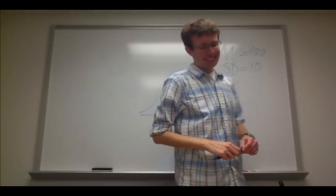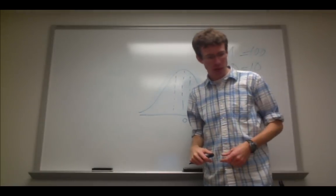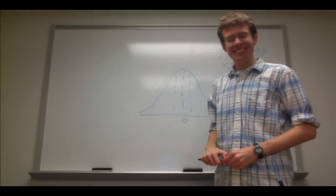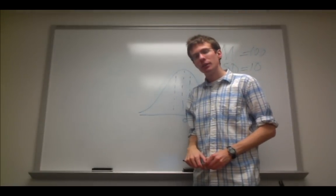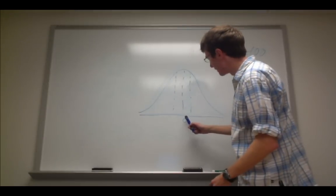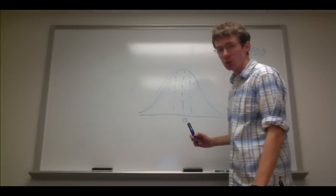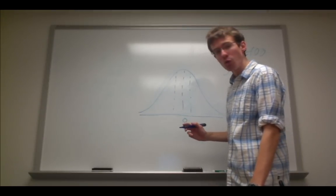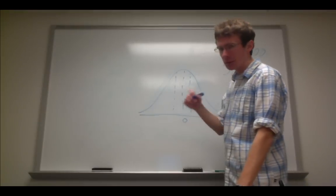So looking up at our z-table, I have one right here, I know that a z-score of 0.5 is associated with 19% of the distribution between zero and a z-score of 0.5.